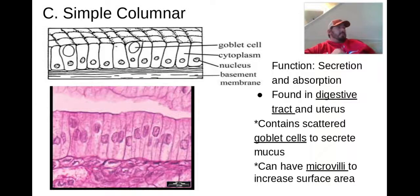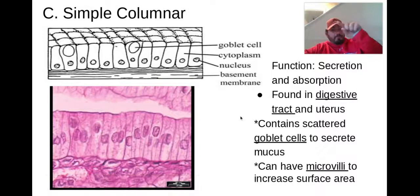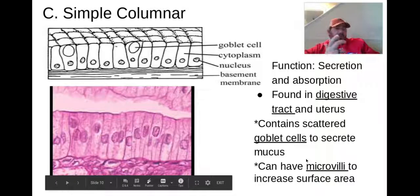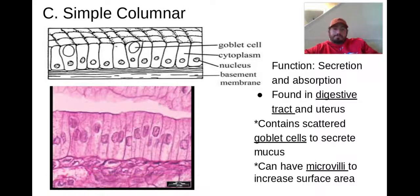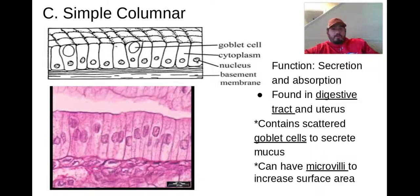We'll talk way more about this when we get into the digestive system. But microvilli are little tiny microscopic fingers with little bumps that increase the surface area — that's all you need to know for microvilli right now. In this picture you can see the goblet cell that makes mucus, the cytoplasm of the regular columnar cells, the nuclei, and that basement membrane before we get to the connective tissue.